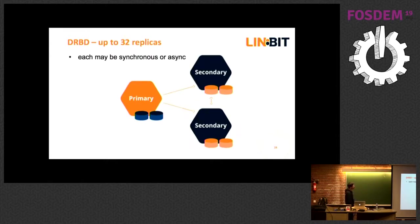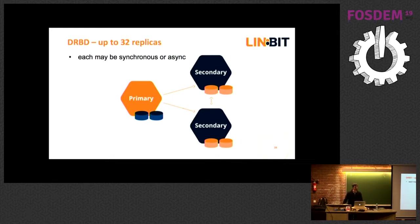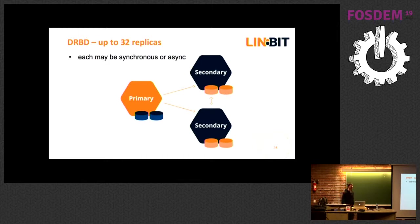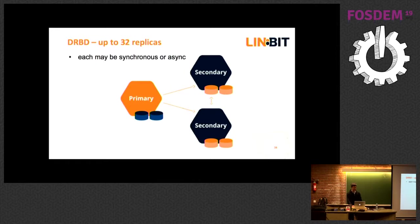With DRBD 9, DRBD has learned to replicate to more than one peer — now up to 32, though that's somewhat theoretical since replicating 31 times creates a lot of storage overhead. What we normally see at customer sites is three or four replicas, very seldom six if you have multiple data centers. The typical case is still two or three replicas — a primary and one or two secondaries per resource. You can have multiple resources and each resource can have multiple volumes.